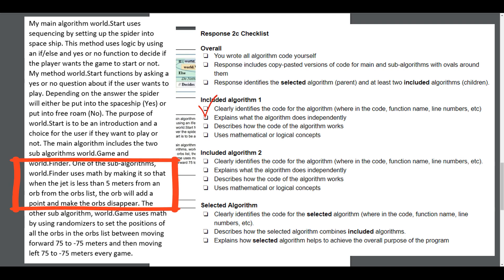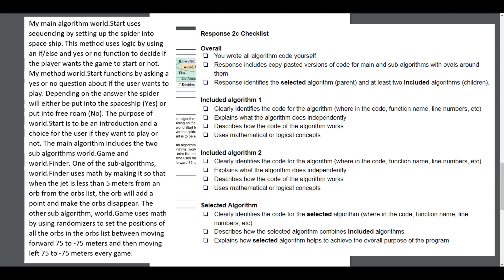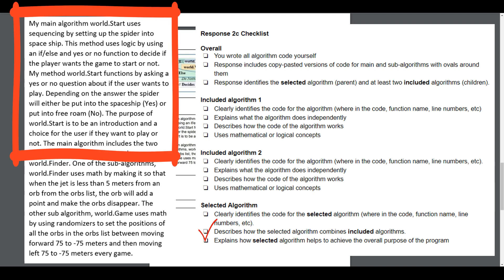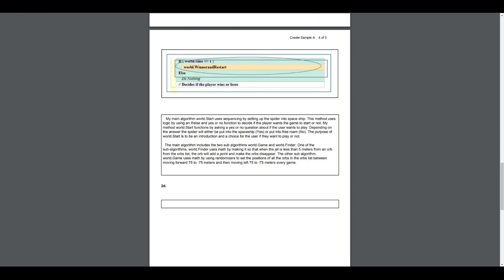The student does explain what algorithm one does independently, describes how the code works, and uses mathematical and logical concepts. We repeat this for algorithm two: clearly identifying the code, explaining what it does independently, describing how the code works, and confirming it also uses mathematical and logical concepts. Don't forget, we also need to address the larger parent algorithm. The student clearly identifies the code for the selected algorithm, describes how it combines the included algorithms, and explains how the selected algorithm helps achieve the overall purpose of the program. This one would receive full credit — points on rows 4, 5, and 6.